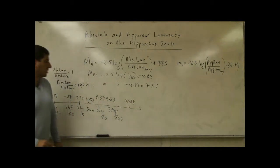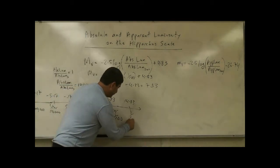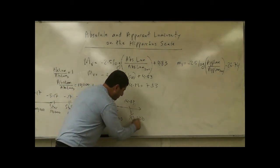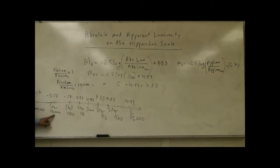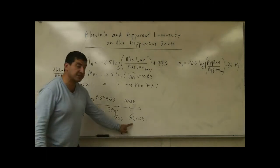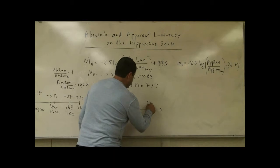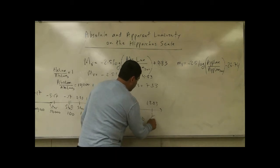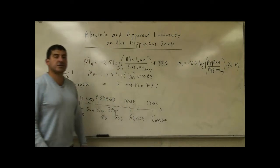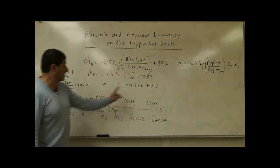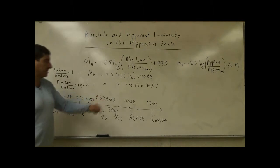Going another 5 units to 14.83 gives a star one-ten-thousandth the brightness of the sun — just as 10,000 times brighter sits at negative 5.17 on the other side. Five more units at 19.83 gives one-millionth the brightness of the sun. So the scale spans 15 units each way, covering a factor of one million in each direction.